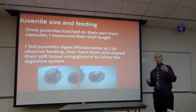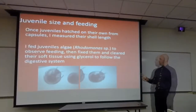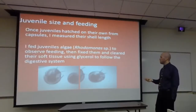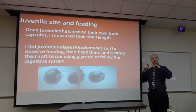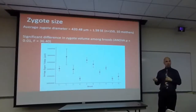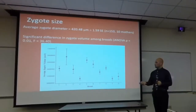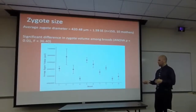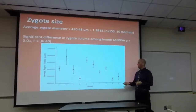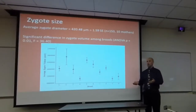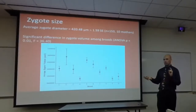For juvenile size, I waited for embryos to hatch from isolated broods and measured shell length. I fed juveniles algae to see if they could eat, then fixed them and cleared their soft tissue with glycerol to use the algae as a digestive system highlighter. Results: the average zygote diameter of Crepidula williamsae is 420 microns. I saw significant variation between the 10 broods measured, likely due to maternal effects — this intraspecific variation will be useful later.